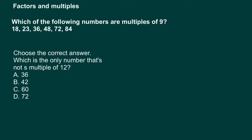Let's go through two more examples. First question: which of the following numbers are multiples of nine? We have eighteen, twenty-three, thirty-six, forty-eight, seventy-two, and eighty-four. Nine times two gives us eighteen, so yes, that's a tick — eighteen is a multiple. Nine times one is nine, nine times two is eighteen, nine times three is twenty-seven, so twenty-three is not a multiple of nine. Nine times four is thirty-six, so thirty-six is a multiple — tick.